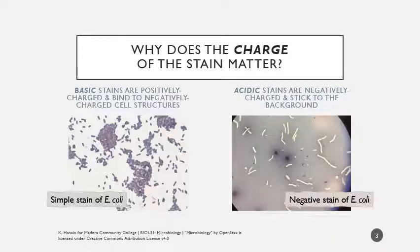This slide should be familiar to you. It really speaks to the charge of a stain and how that influences its ability to interact with a cell. Remember that most cellular material tends to be pretty negatively charged, whether it's proteins or the phospholipid membrane. So if you think about magnets, remember that opposites attract — the positive side of one magnet will stick to the negative side of another. Basic stains are positively charged and they're going to be binding to those negatively charged cell structures. That's how we get simple staining.